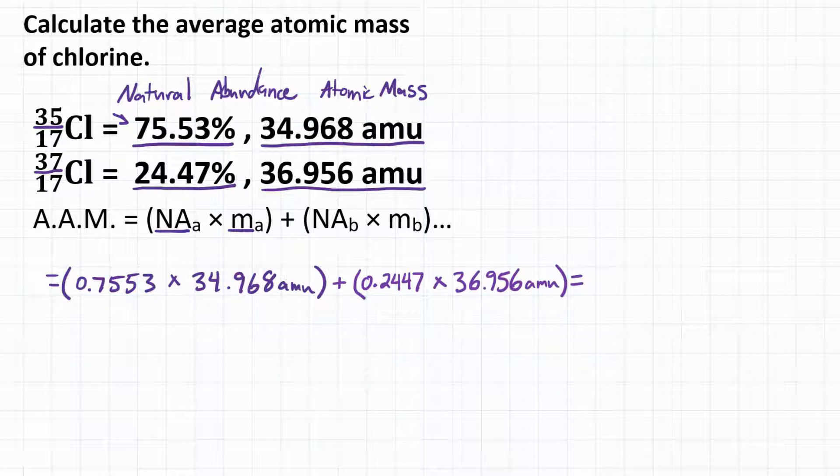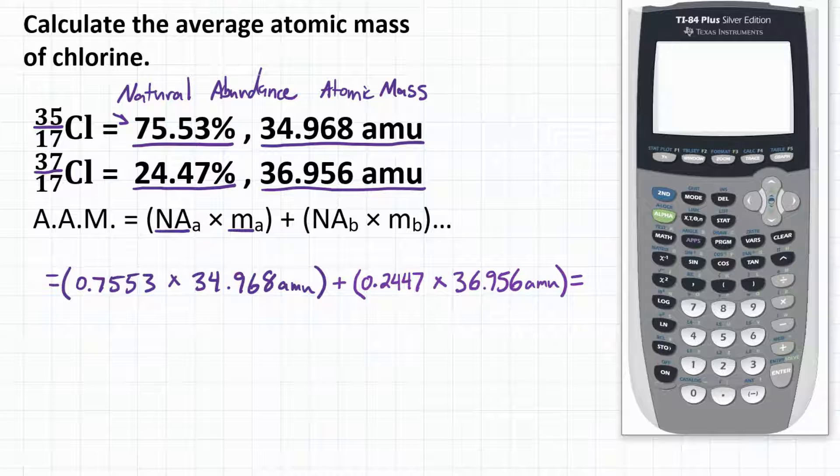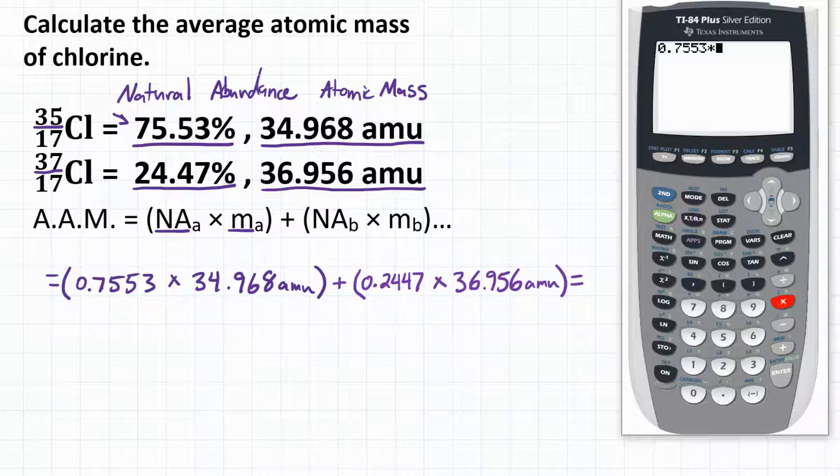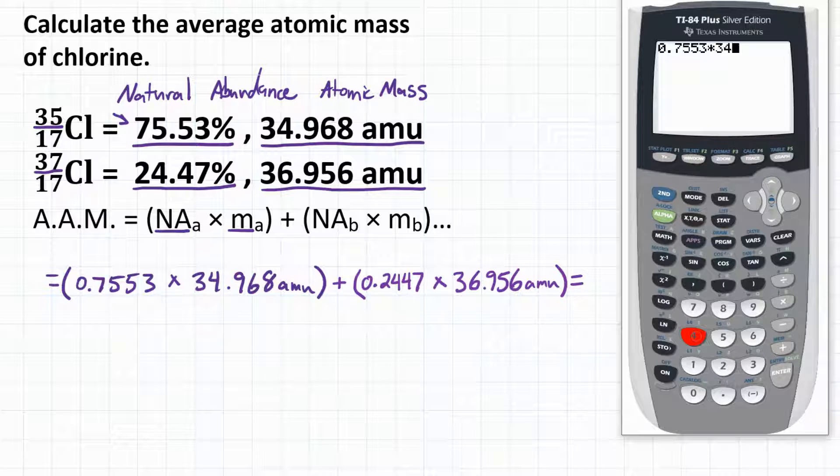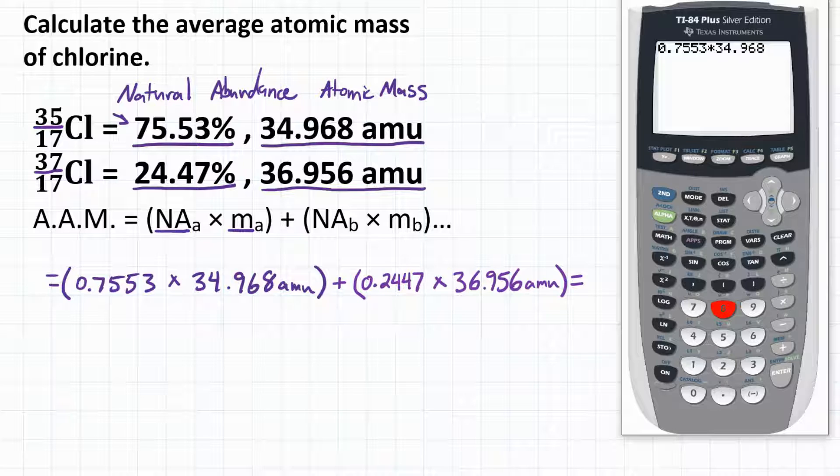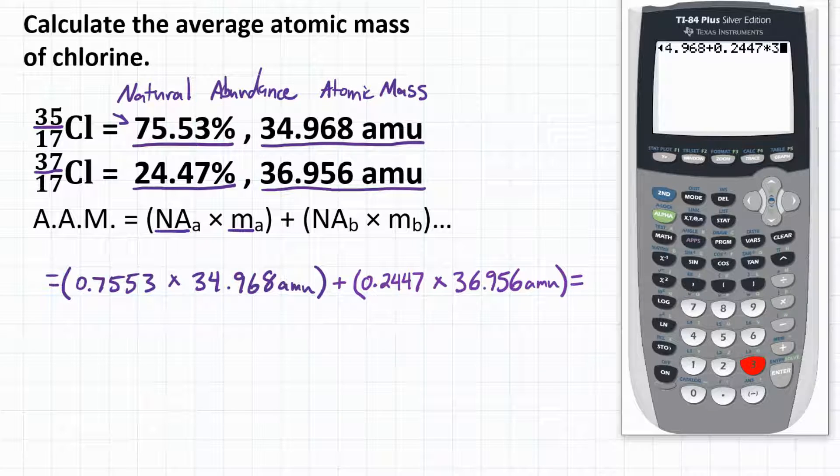All right, so let's punch this in our calculator. You are going to do 0.7553 times 34.968 plus 0.2447 times 36.956. Hit equals,